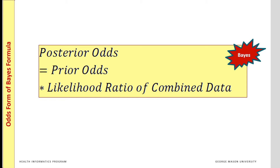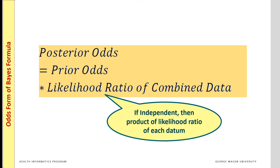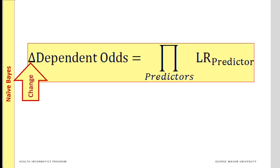The best way to use the concept of likelihood ratio to predict the probability of an event is to use the Bayes formula. The odds form of the Bayes formula tells us how our current odds for an event — known as prior odds — should be revised based on the likelihood ratio of the observed data. The posterior odds of the event can be reported as the product of prior odds and the likelihood ratio of the combined data. The likelihood ratio of the combined data, under the assumption of independence, is the product of the likelihood ratios of each piece of information.